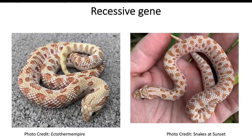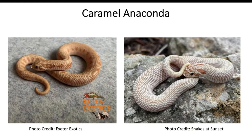Now, let's add some combinations starting with the incomplete dominant gene, the anaconda. The picture on the left-hand side shows a caramel anaconda — the caramel gene with a reduced pattern — and on the right-hand side you have a caramel superconda, so the caramel gene with almost a completely reduced pattern or complete lack of pattern.